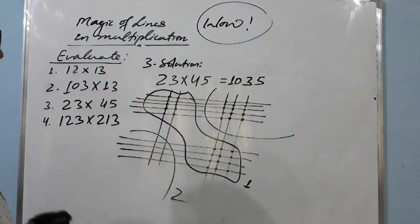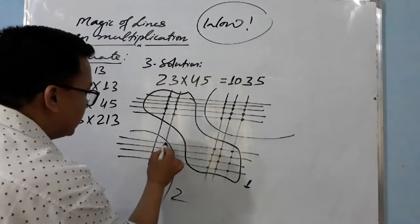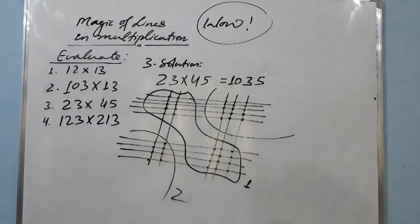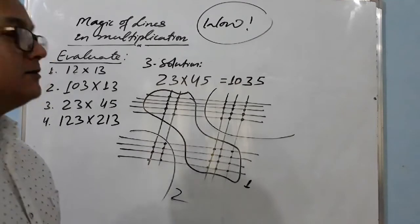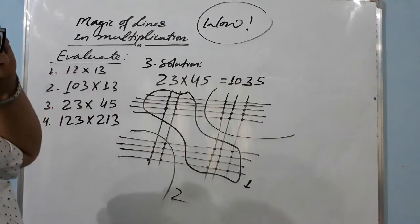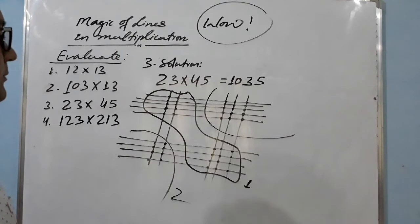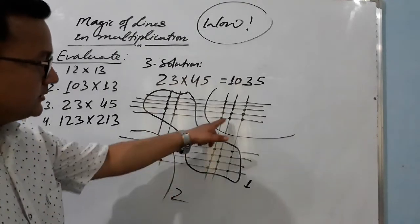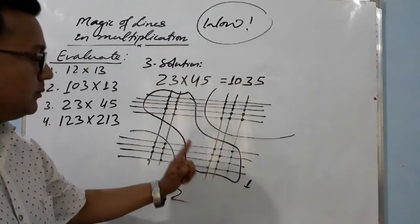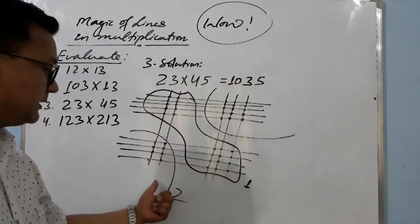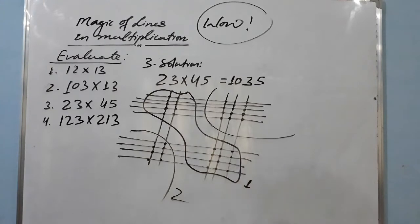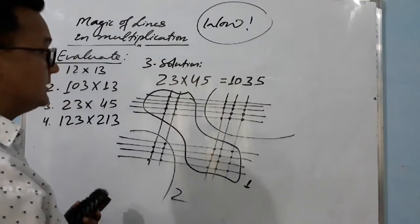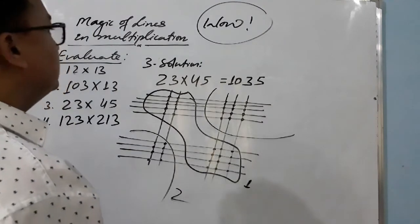So the result is 1035 — what a beauty of mathematics! With the help of points of intersection, we are getting the product of two numbers. If you get a carry-over in any section, you simply add it to the next section. You can verify the answer with your calculator if you have any doubt.